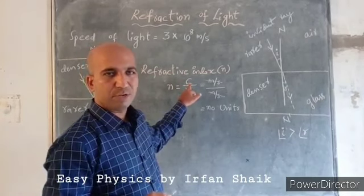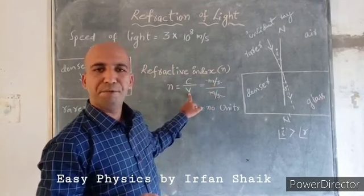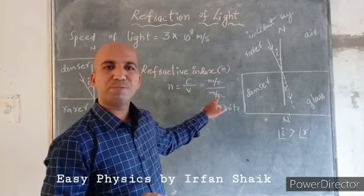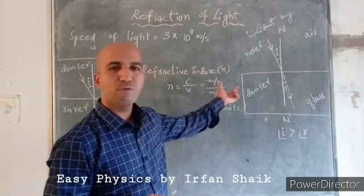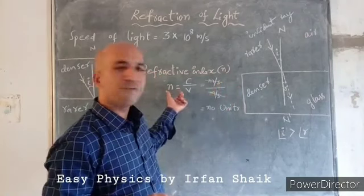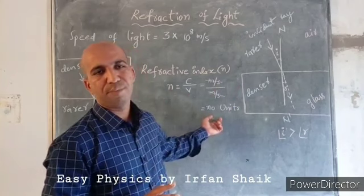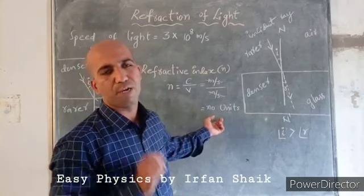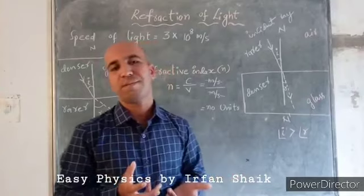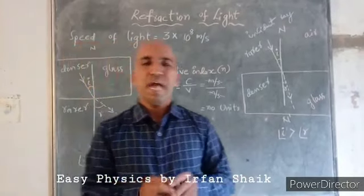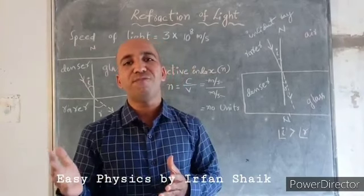The speed of light in vacuum has units of meters per second, and the speed of light in a medium also has units of meters per second, so these cancel out. That is why the refractive index has no units — it is a constant value. As the refractive index of a material increases, the speed of light decreases.